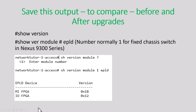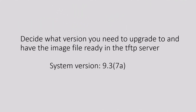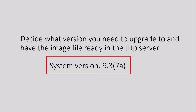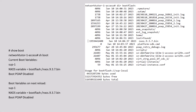You need to save this for your reference, because after you upgrade, you need to compare this with your previous versions of the image. Decide what version you need to upgrade to. In this case, I'm going to upgrade from 9.3.7 to 9.3.7A. Make sure you have this new image version downloaded into your TFTP server.